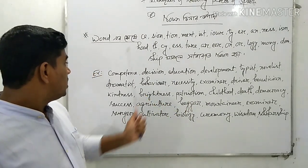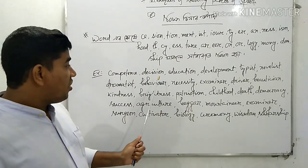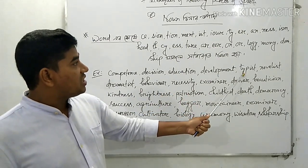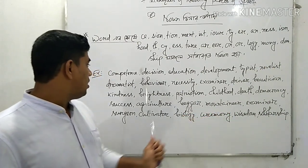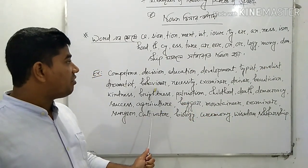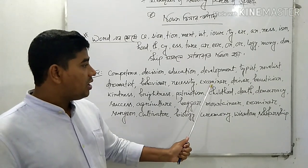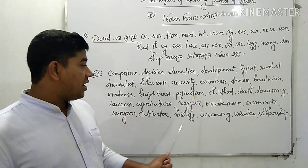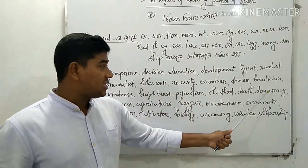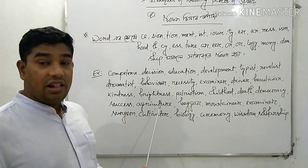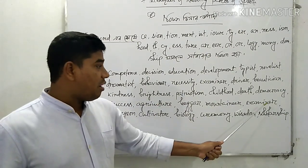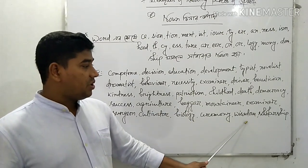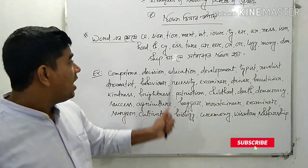Examples include: Competence, Decision, Education, Development, Typist, Novelist, Dramatist, Behavior, Necessity, Examiner, Driver, Beautician, Kindness, Brightness, Childhood, Death, Democracy, Success, Agriculture, Mountaineer, Surgeon, Cultivator, Ceremony, Wisdom, Scholarship.